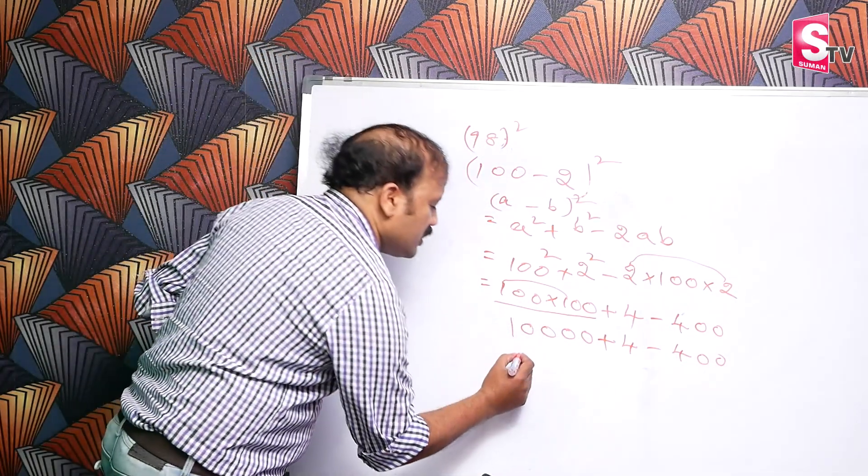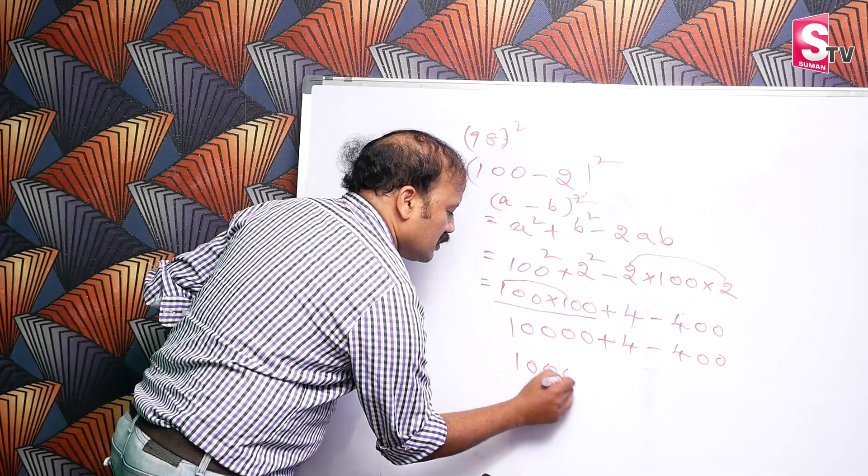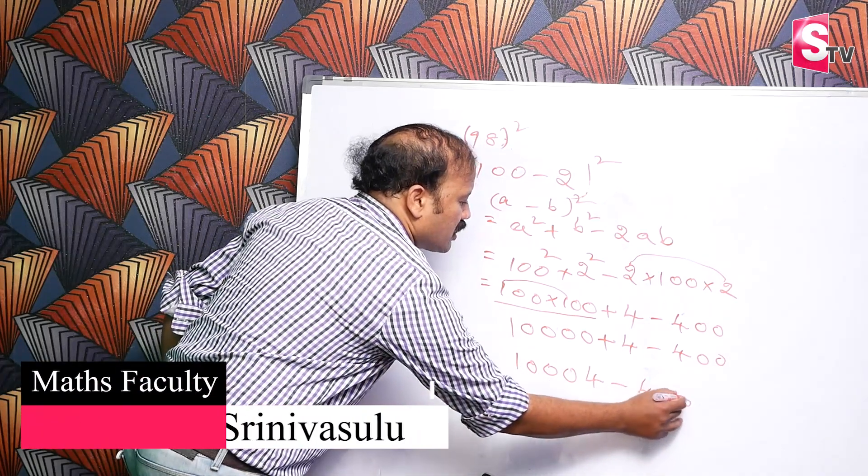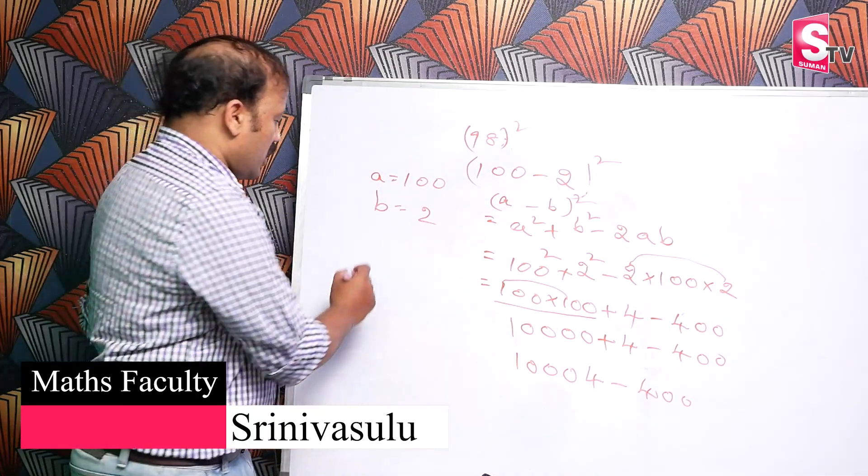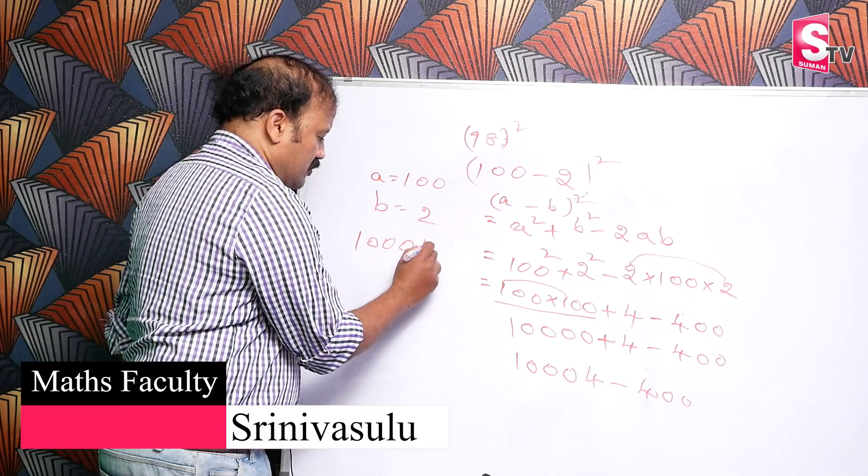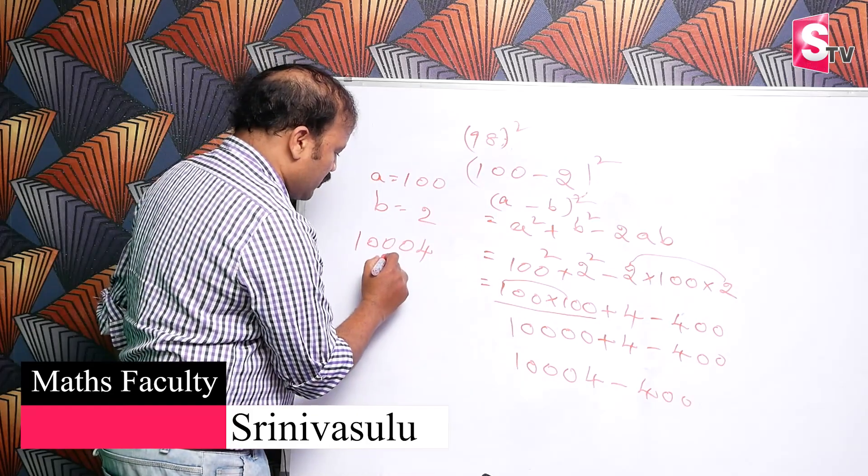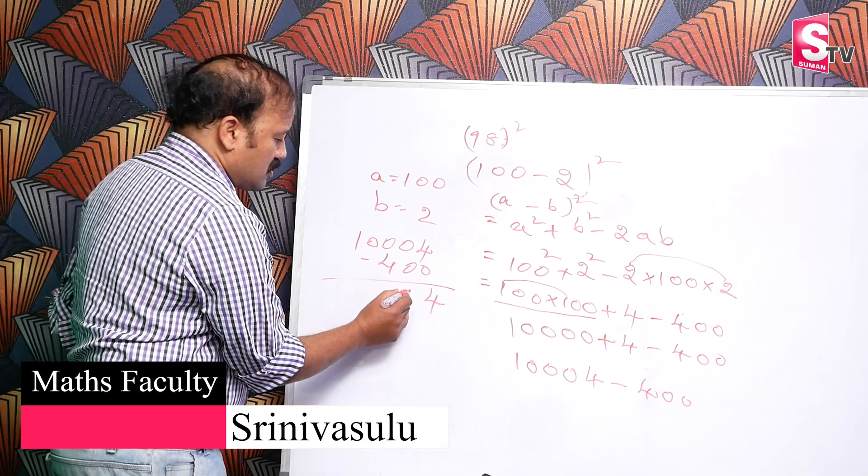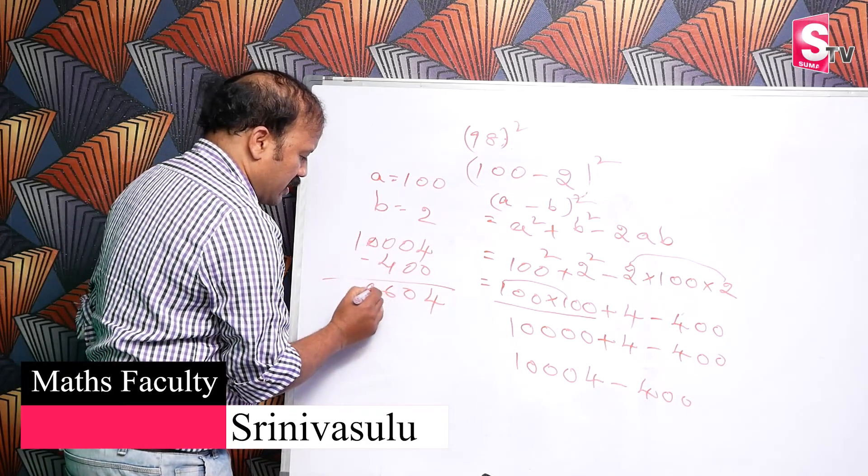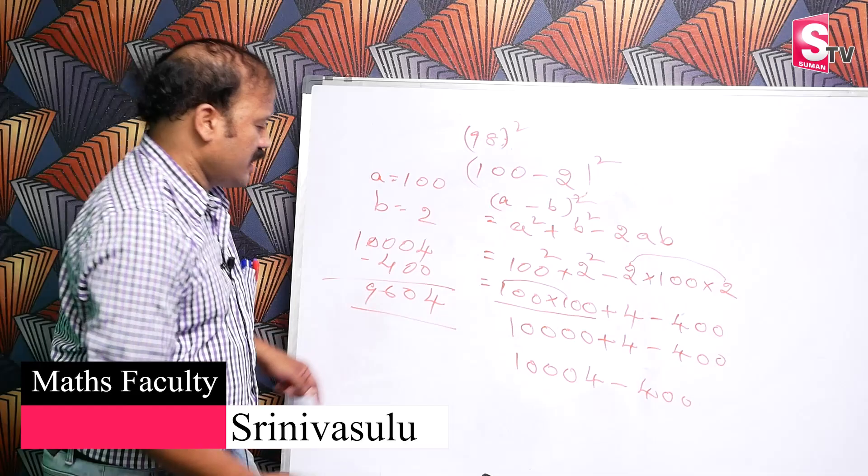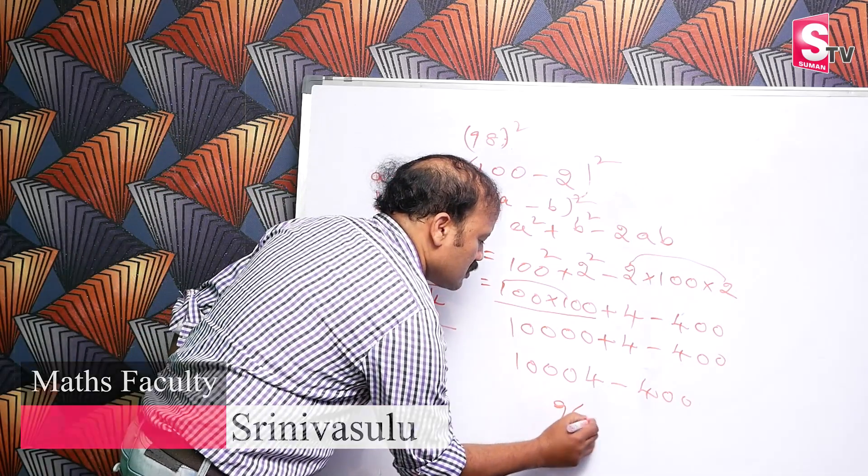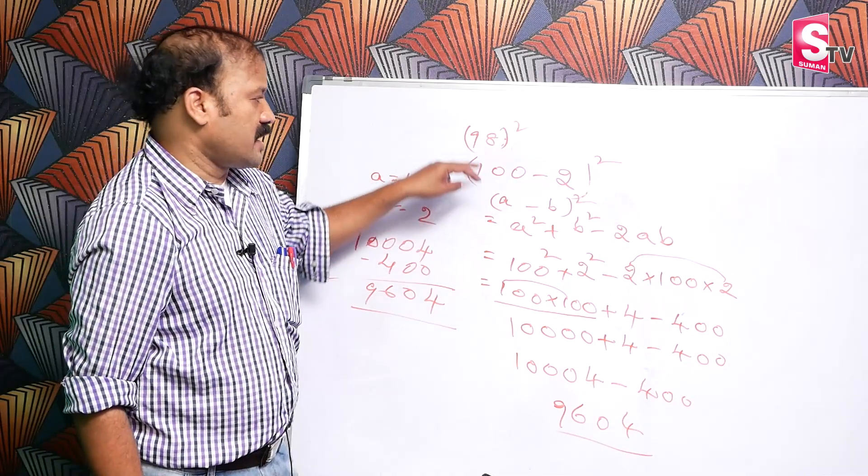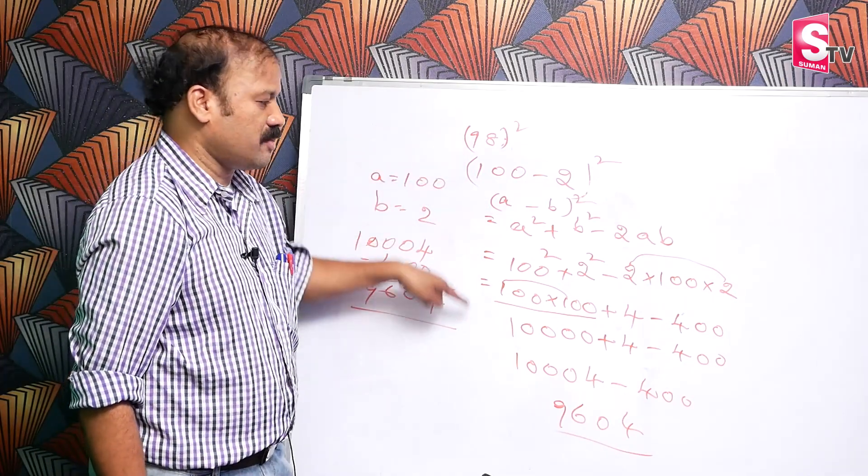So what is that value? 10,004 minus 400. The answer is 9,604. Use this formula to solve the sums: 98 square, 98 into 98, using the formula.